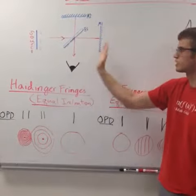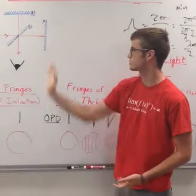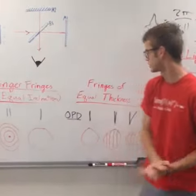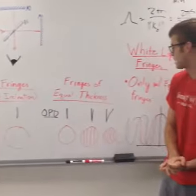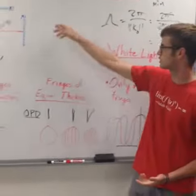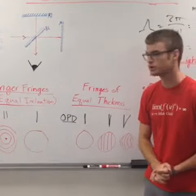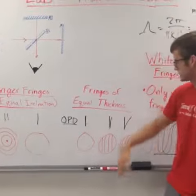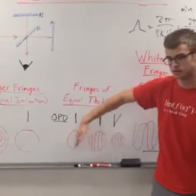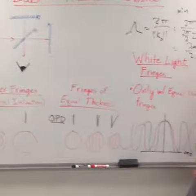We had a compensator which has the same thickness and material as the beam splitter, placed at the same angle to create the same path length. When we move the micrometer in and out for mirror one, we're able to see the fringes move along the left, right, or however the axis is oriented.